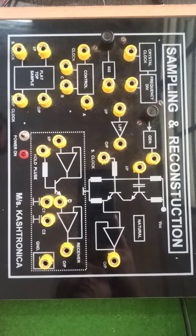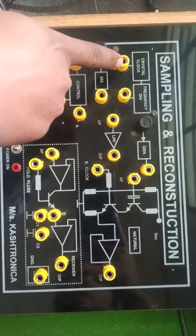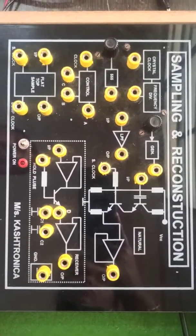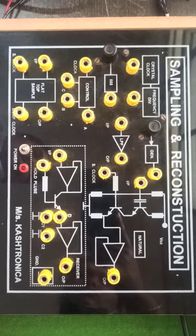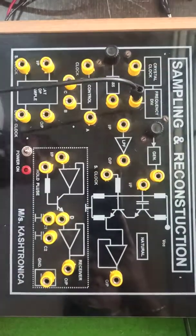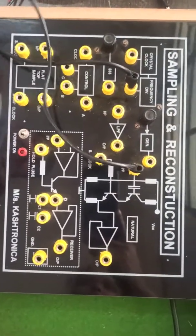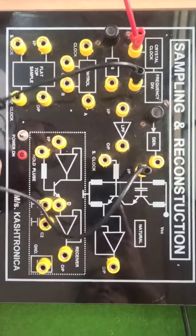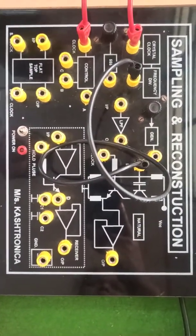Now we'll move towards the actual practical experiment. Here is the crystal clock block that generates the carrier signal — the carrier signal is a high frequency signal. Here is the frequency divider block, which generates the modulated signal having low frequency. Those two frequencies will be added with each other. Initially, we'll start the connection: the frequency divider block output is given as the first input of the natural sampling block. The second input is the crystal clock — the carrier signal having high frequency — given to the clock to control it.